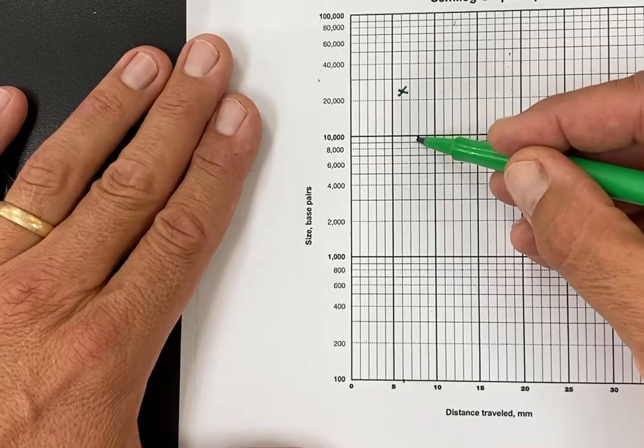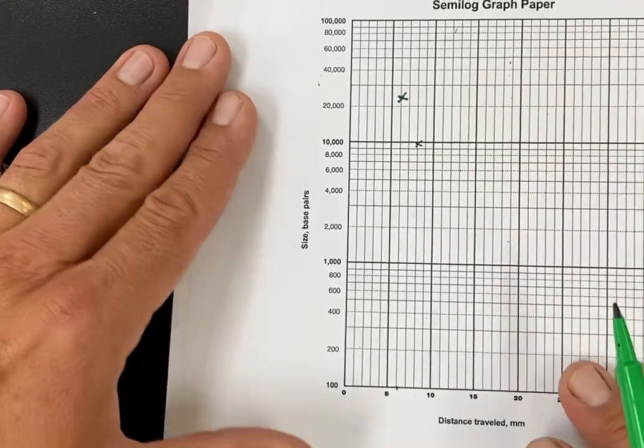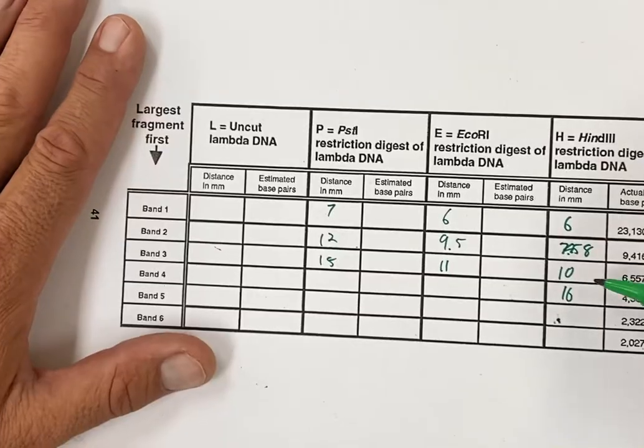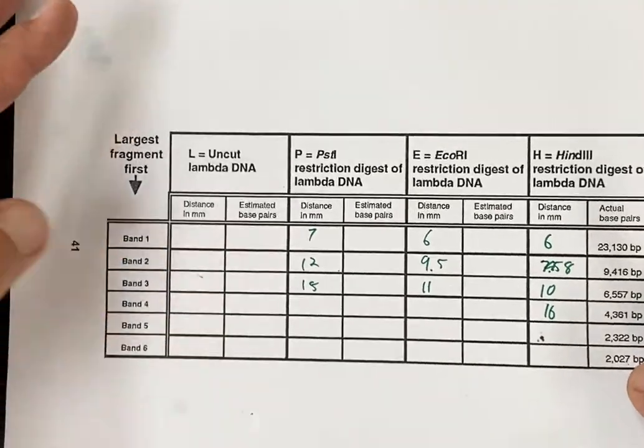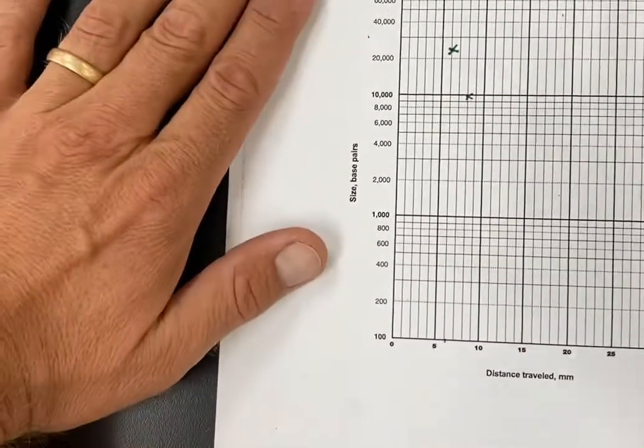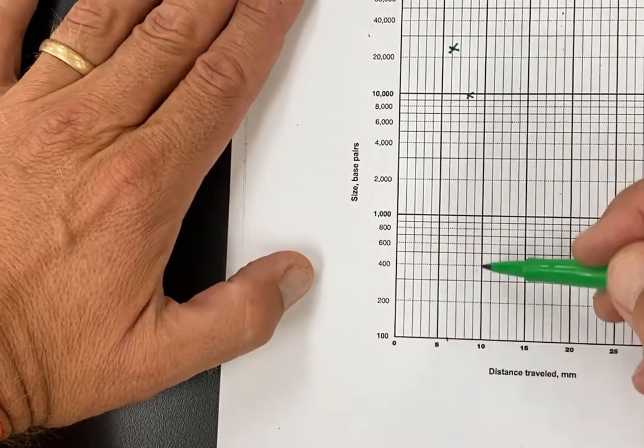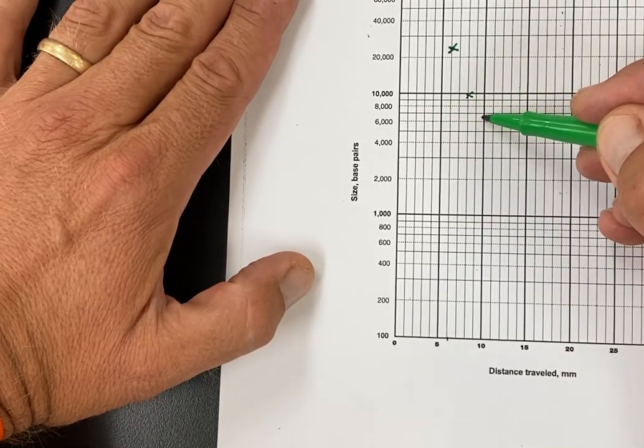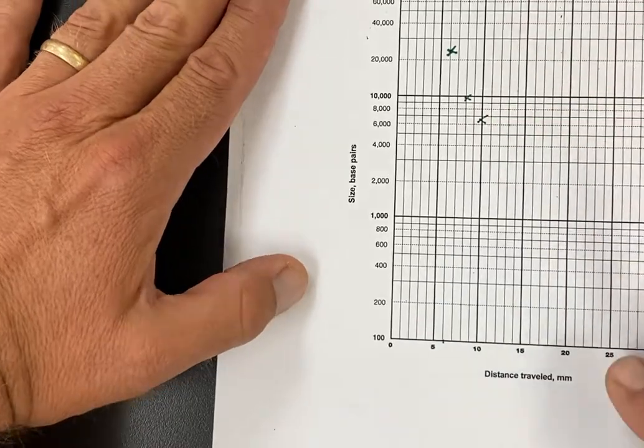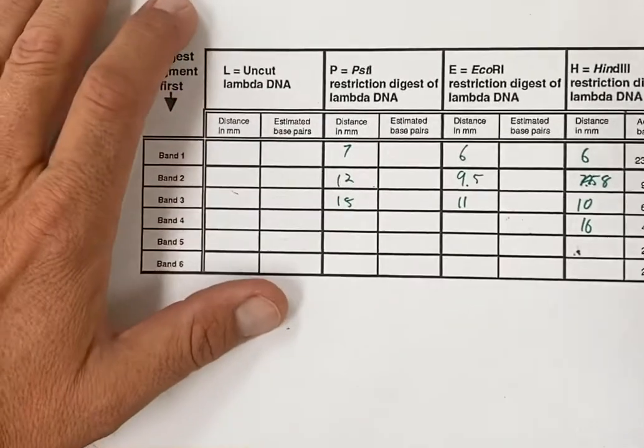Back again, my next band was at 10 millimeters and that's about 6,500 base pairs. So I come back to 10, there's 6,500 is going to be somewhere in here.